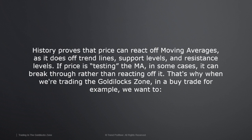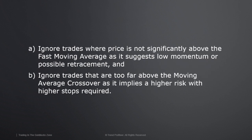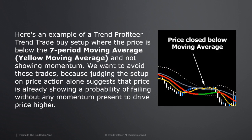That's why when trading the Goldilocks zone in a buy trade, we want to: A) ignore trades where price is not significantly above the fast moving average, as it suggests low momentum or possible retracement; and B) ignore trades that are too far above the moving average crossover, as it implies higher risk with higher stops required. The best way to learn these is to join in the webinars, forum, and chat room where we can look at these on a case-by-case basis.